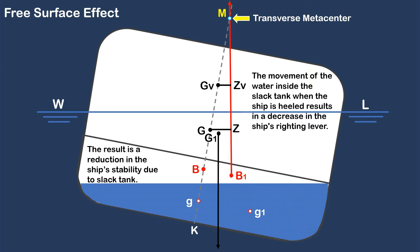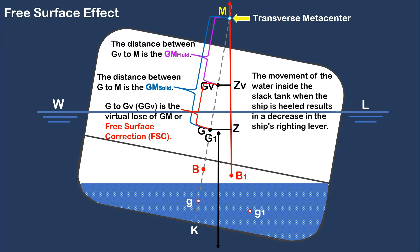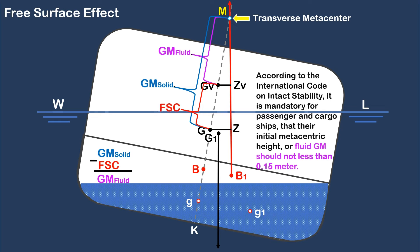In this case, we can say that the distance between GV to M is the fluid GM, while the distance between G to M is the solid GM. The distance between capital G to GV is the virtual loss of GM, usually called the free surface correction, or FSC. If we subtract the free surface correction FSC from the solid GM, the difference is the fluid GM. According to the International Code on Intact Stability, it is mandatory for passenger and cargo ships that their initial metacentric height, or fluid GM, should not be less than 0.15 meter. I have made a separate video about GM or metacentric height and how to calculate the fluid GM — kindly check the link in the description.